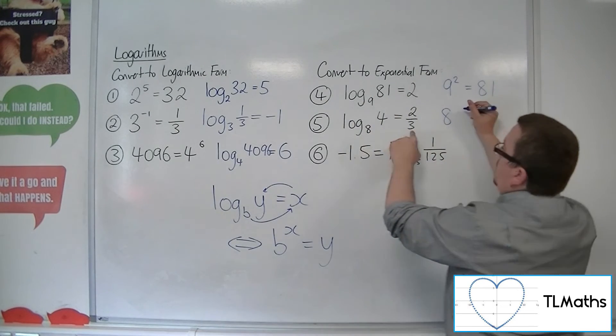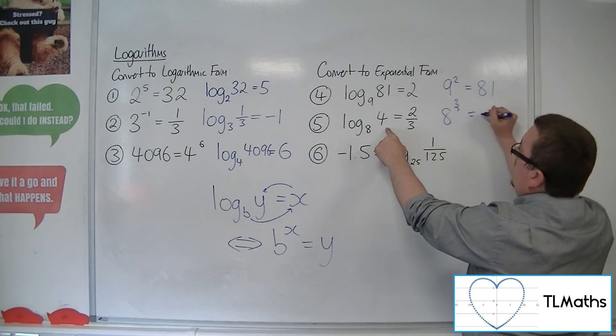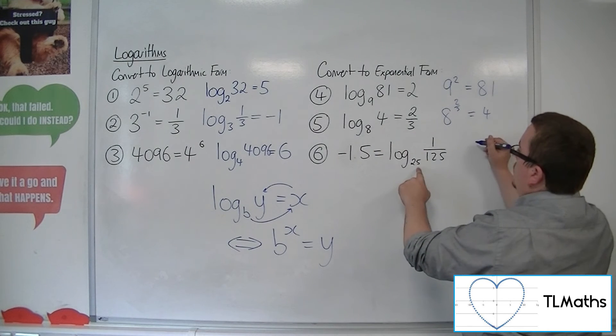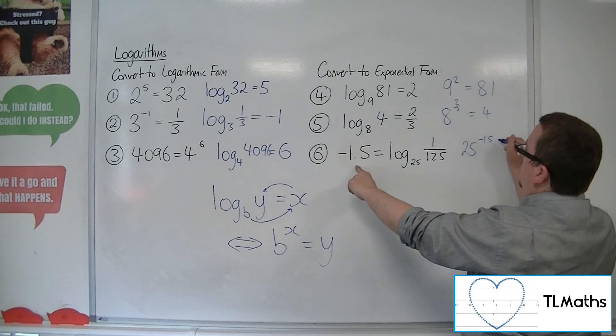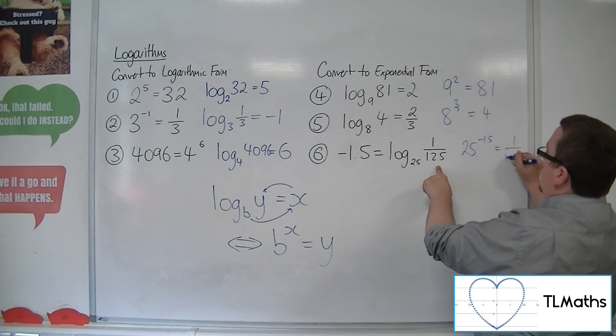8 to the 2 thirds is equal to 4. 25 to the minus 1.5 is equal to 1 over 125.